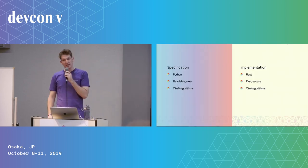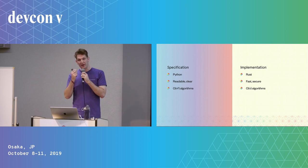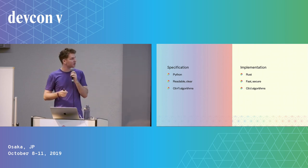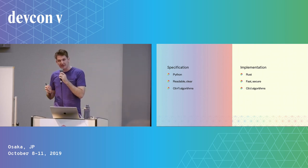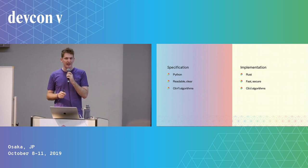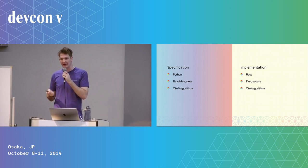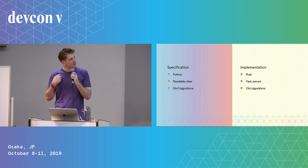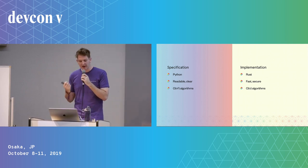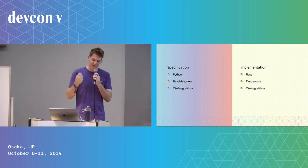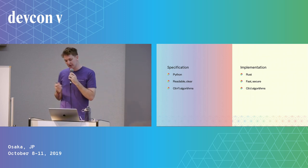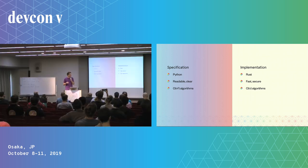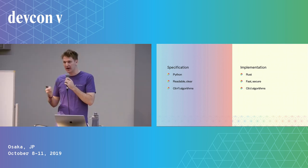With Ethereum 2, we have the benefit of having a nice executable specification. It's written in Python, and it's written with a focus on being very clear and very readable. Now with Lighthouse, our implementation is in Rust, and we have a focus on being fast and secure. We also want to be readable, but most of all we want to be secure. And performance also helps with security because it helps us avoid denial-of-service attacks.